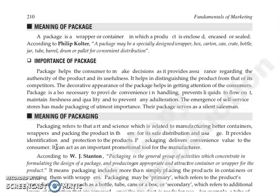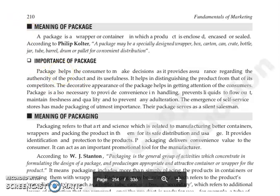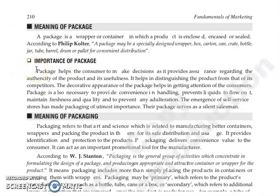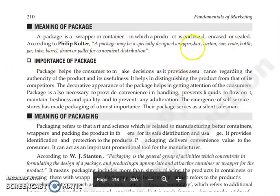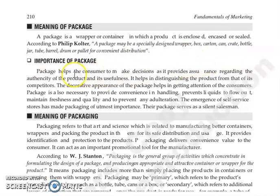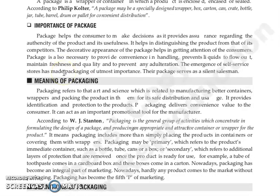The meaning of a package is the wrapper or container in which a product is enclosed, encased, or sealed. According to Philip Kotler, a package may be a specially designed wrapper, box, carton, cane, crate, bottle, jar, tube, barrel, drum, or pallet for convenient distribution. It can be in any form — wrapper, box, carton, cane, crate, bottle, jar, tube, barrel, drum, or pallet — anything in which you place the product for convenient distribution.